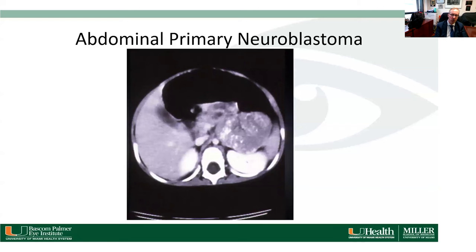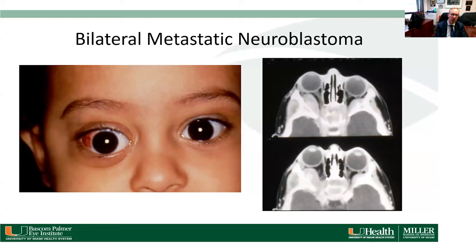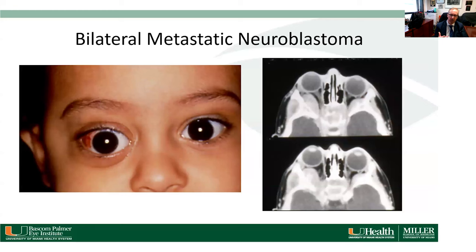Another child had subconjunctival hemorrhage, ecchymosis of the right lid, proptosis, and outward and downward displacement of his right eye — less than two years of age, with a history of incidental trauma unrelated to this. CT scan showed bilateral orbital masses with involvement of the skull base and temporalis muscle — bilateral metastatic neuroblastoma from the abdomen. The patient was treated with chemotherapy and radiation therapy.